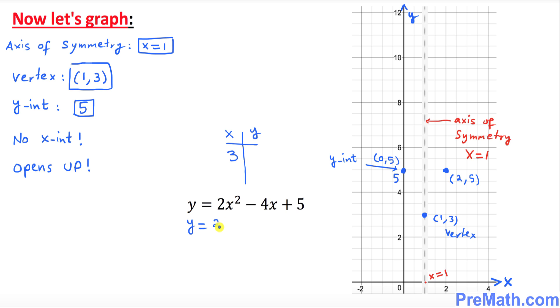Wherever you see x, replace it by 3 and see what y turns out to be. So y equals 2 times, replace x by 3, minus 4 times 3 plus 5. That's going to give you 2 times 9 minus 12 plus 5, which is going to give you 11.